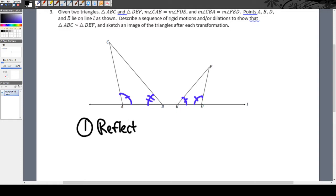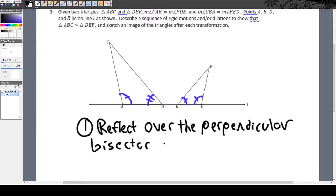So all the points on the pre-image are equally as far from the line of reflection as all the points on the image. I can use this to my advantage because I can say I'm gonna reflect over the perpendicular bisector of BE.